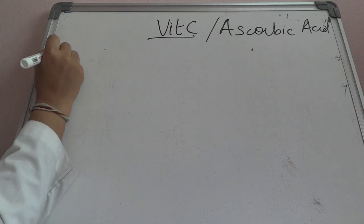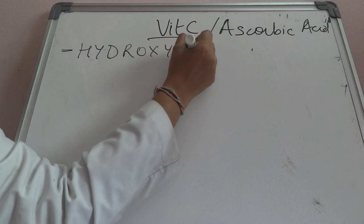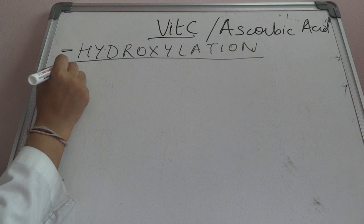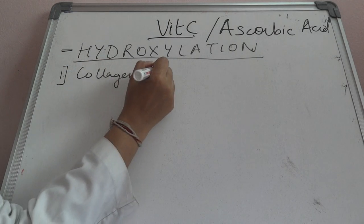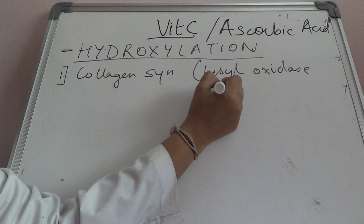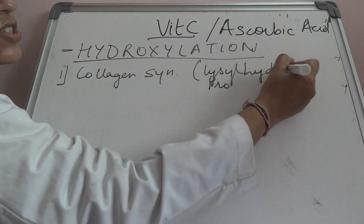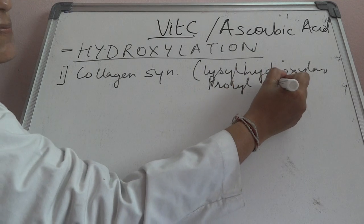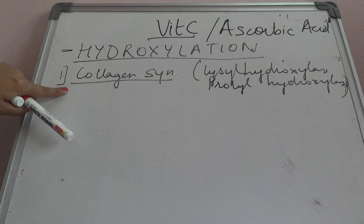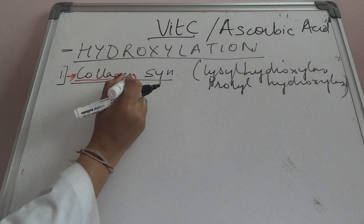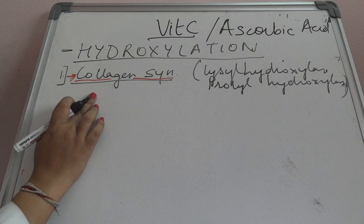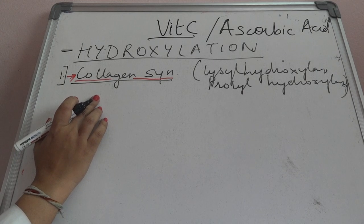The most important biochemical role of vitamin C is in hydroxylation reactions. Wherever a hydroxylation reaction takes place in the body, vitamin C is present as a coenzyme. In collagen synthesis specifically, it acts as a coenzyme for lysyl oxidase and prolyl hydroxylase. Because vitamin C is essential for collagen synthesis — a critical component of connective tissue — its deficiency leads to the most important manifestation of vitamin C deficiency: scurvy.